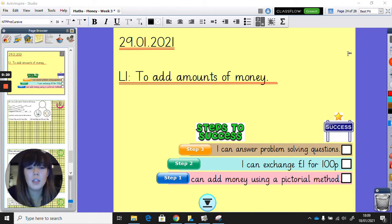Our first step is to add money using a pictorial method, which that means drawing it. Step two, I can exchange £1 for 100p.